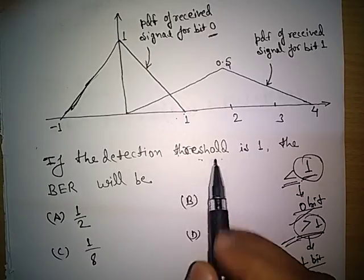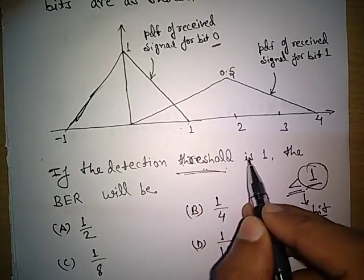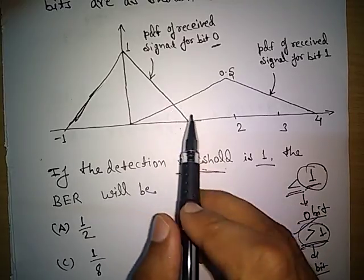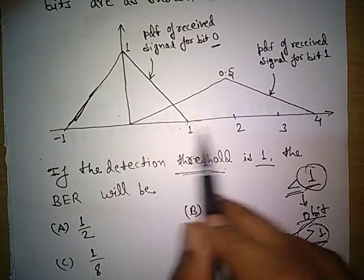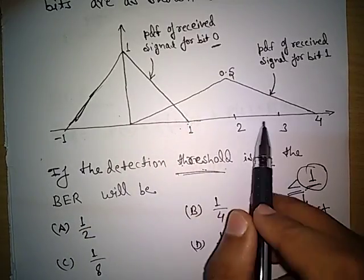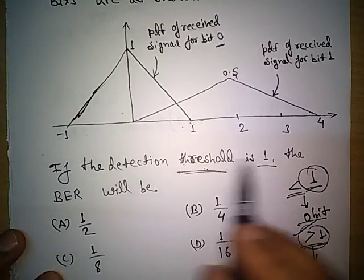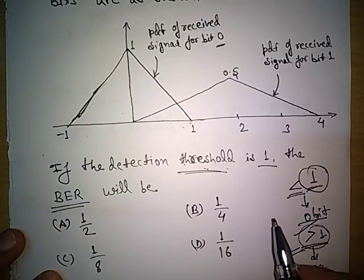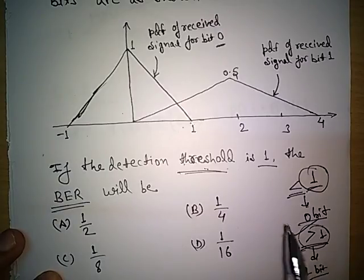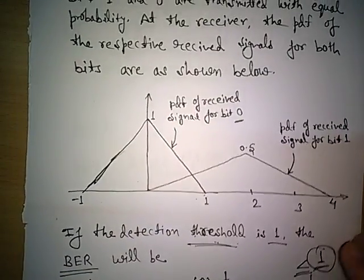So threshold is 1 — less than 1 will be considered as 0, and greater than 1 will be considered as 1. We have to find out the bit error rate. First we will understand what bit error rate is and then we will solve this problem.